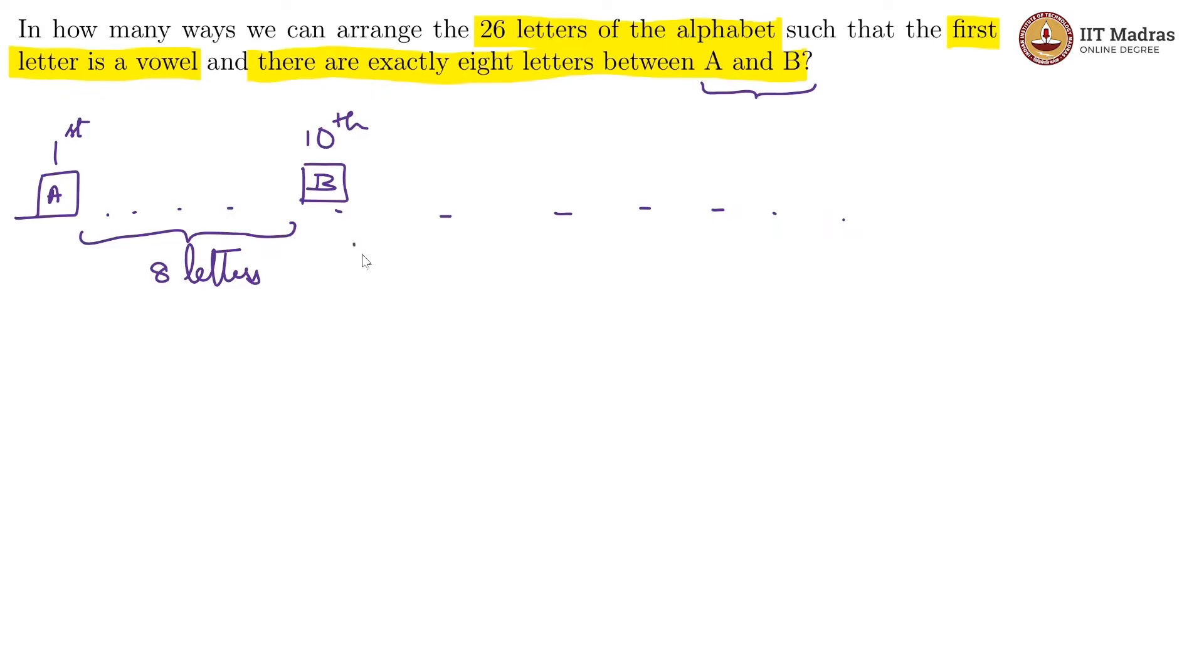Now these are 10. What is left is the remaining 16 letters, and these 8 plus 16, the 24 letters can be rearranged in 24 factorial ways and all of them are valid by our conditions.